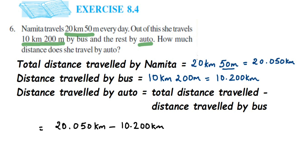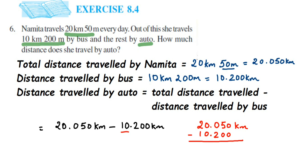I'm going to use the lining-up method — we line up the decimals one below the other. First number is 20.050 kilometers. Place the decimal of the second number below it: 10.200. Now subtract: zero minus zero is zero, five minus zero is five, zero minus two — we cannot do this, so we need to borrow.